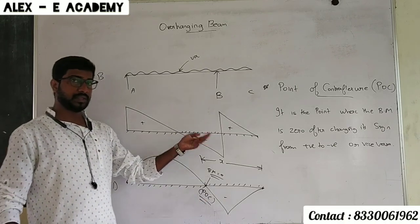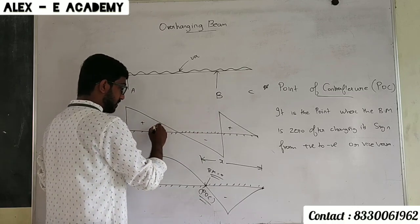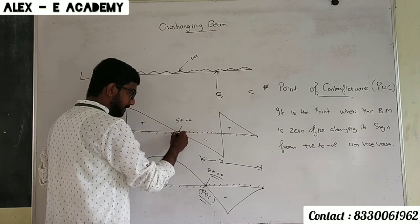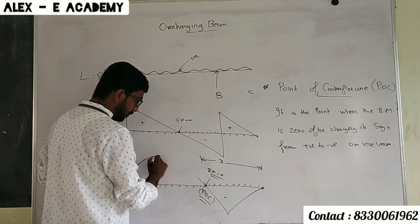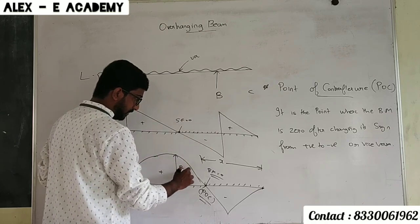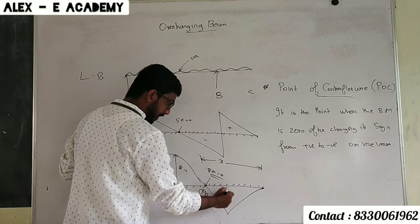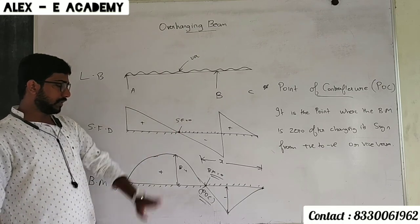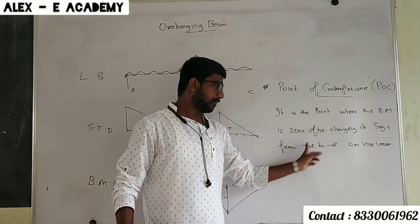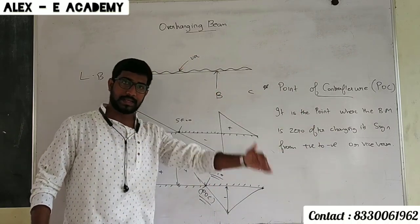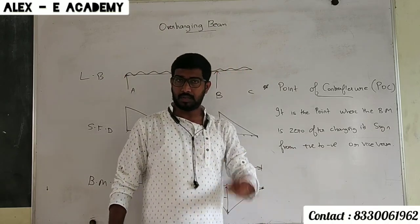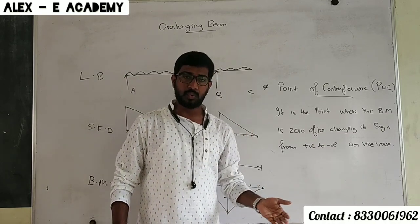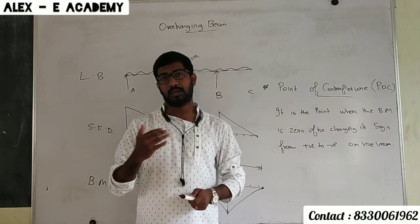Whenever the shear force diagram changes sign from positive to negative, at one point the shear force meets the baseline. Here, the shear force will be equal to zero. At this point, bending moment will be maximum. Where shear force crosses from positive to negative, we get maximum positive bending moment or maximum negative bending moment.